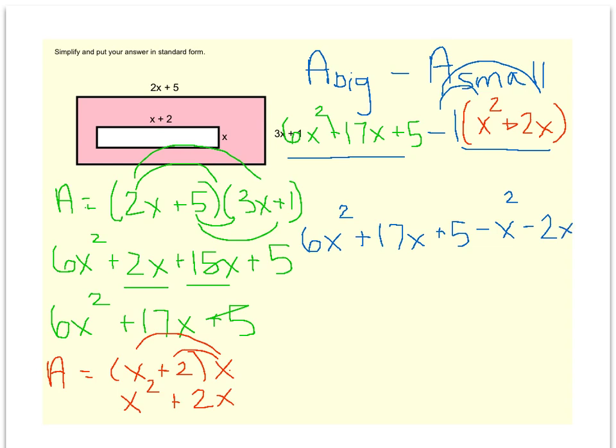And now to finish, I'll combine like terms. I have 6x squared minus 1x squared, which is 5x squared. 17x minus 2x is a plus 15x. And then all I have left is a plus 5.